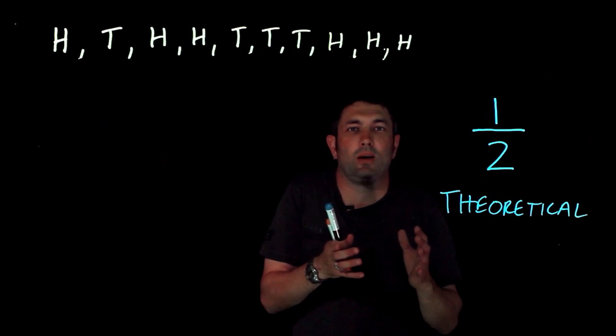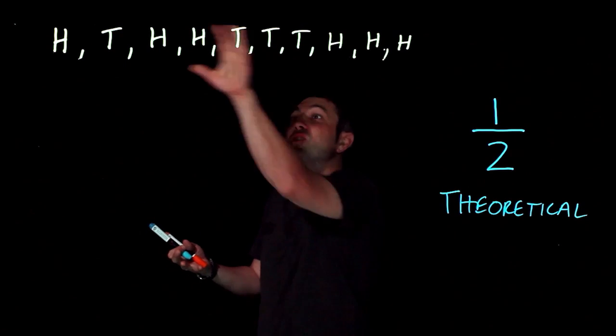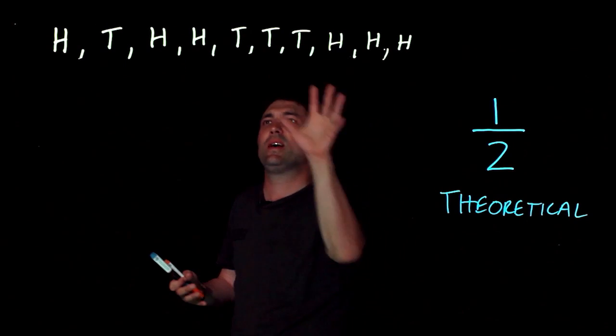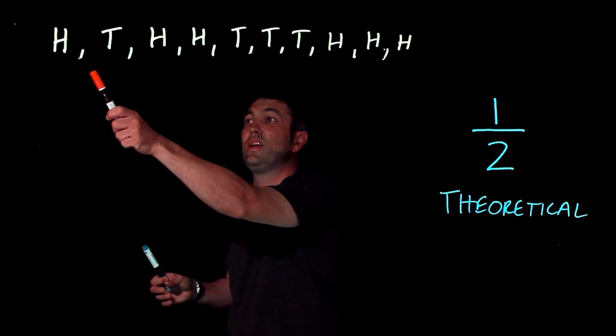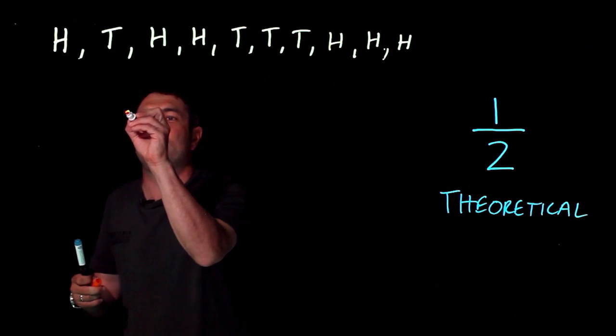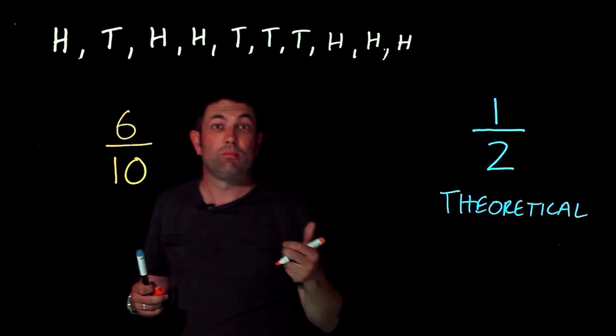Now I could also look at it as relative frequency and therefore experimental probability. Now that's looking at what's happened previously. Now what happened previously actually is I got six heads out of ten flips.